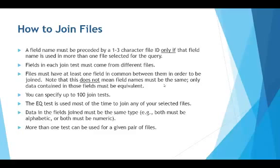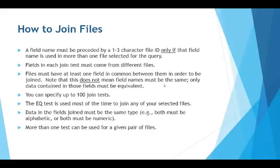You can specify up to a hundred join tests, though I've never gotten close to that. The EQ test is used most of the time to join selected files — I've only once in my career used something other than EQ. Data in the fields being joined must be the same type: both alphabetic or both numeric. More than one test can be used for a given pair of files — for example, joining the order header with the order detail I would typically use both the company number and the order number.